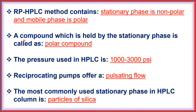The RP-HPLC method contains a non-polar stationary phase and a polar mobile phase. A compound which is held by the stationary phase is called a polar compound. The pressure used in HPLC is 1000 to 3000 psi.